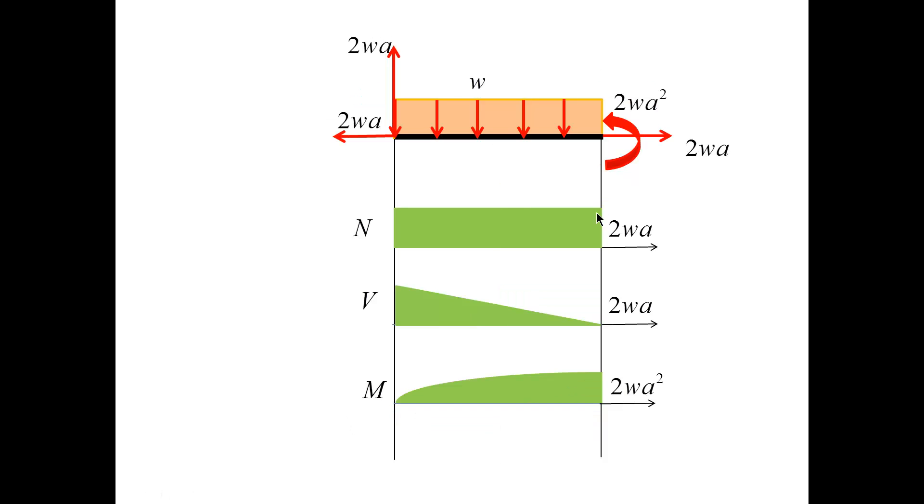Now, for the right beam, the normal force is constant as before. The shear force starts with 2Wa and proceeds with the negative slope equal to minus W for the length 2A. As a result, V arrives at 0.